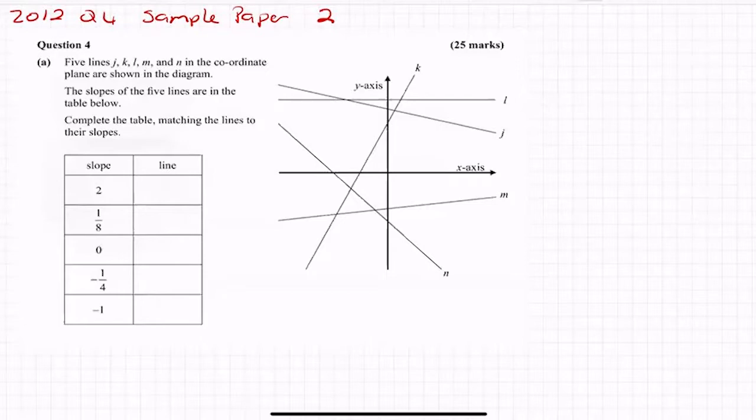So it says five lines J, K, L, M and N in the coordinate plane are shown in the diagram. The slopes of the five lines are given in the table below. Complete the table, matching the lines to their slopes.